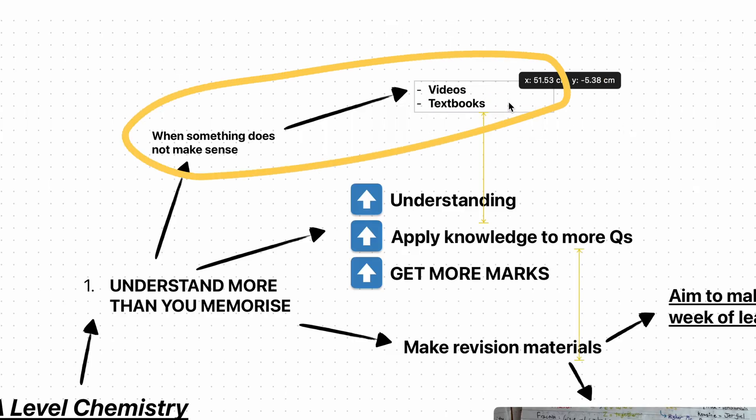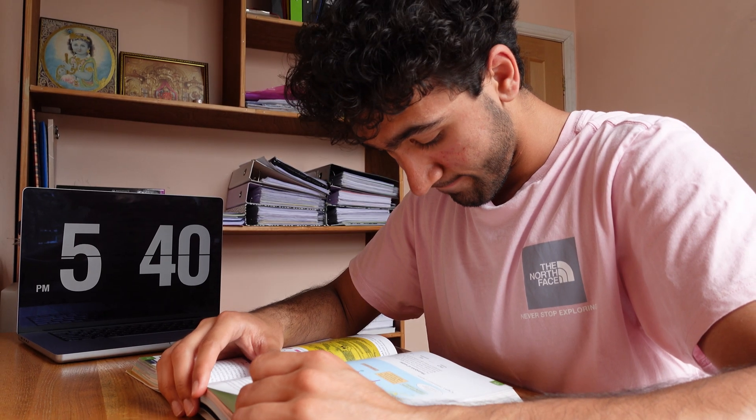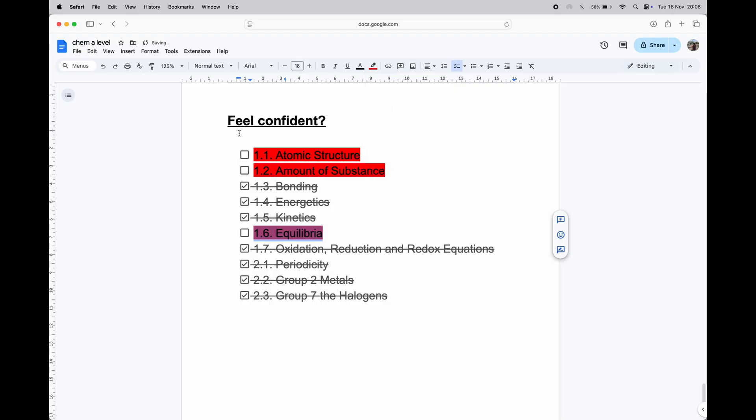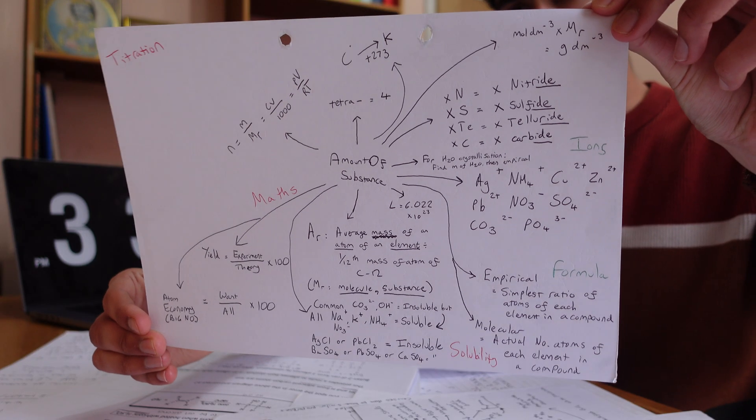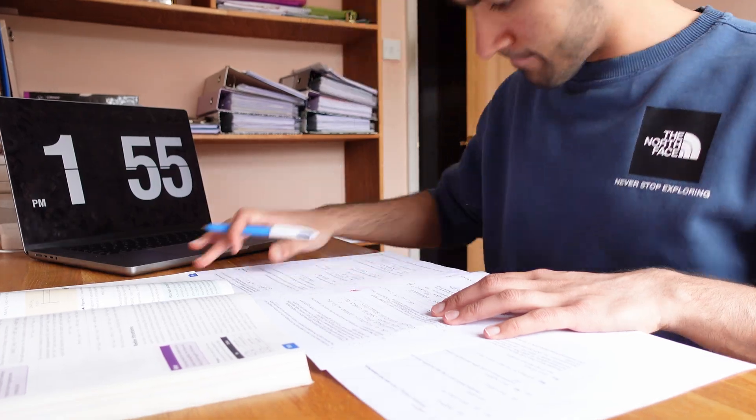Something I want you to take away is that if something doesn't make sense, the sooner you fix it, the better, because confusion builds up if it's left unchecked. If you've got a slight weakness in one of the earlier topics in A Levels, it might make later topics harder to understand, which means you might lose marks in your exams.